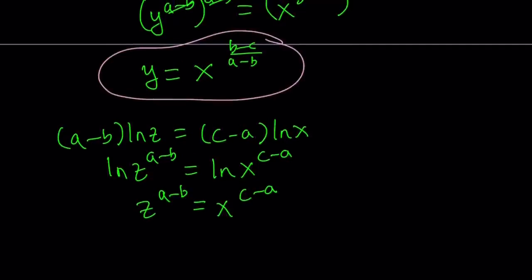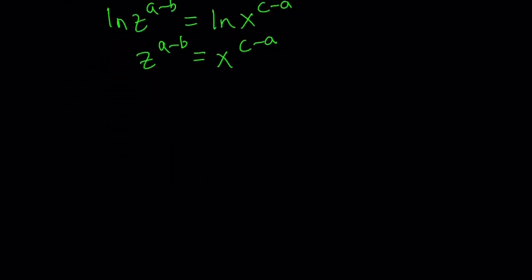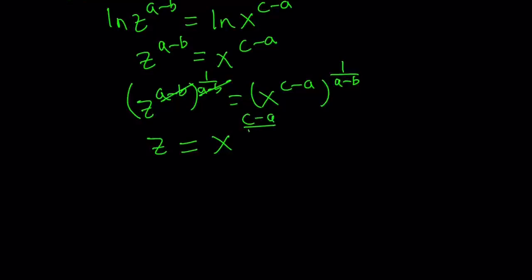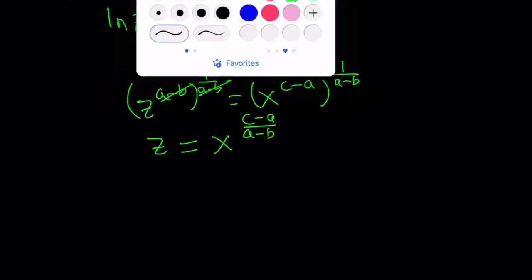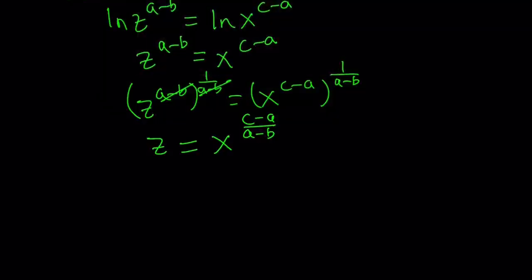And by raising both sides to the power 1 over a minus b, we get z to the power a minus b to the power 1 over a minus b equals x to the power c minus a to the power 1 over a minus b. Again, a minus b cannot equal zero. We get the following. z is isolated and it becomes x to the power c minus a divided by a minus b. So this is another thing that we're going to use. Let's go ahead and frame that as well.